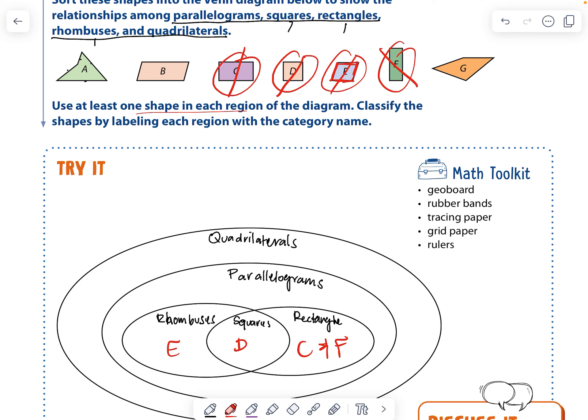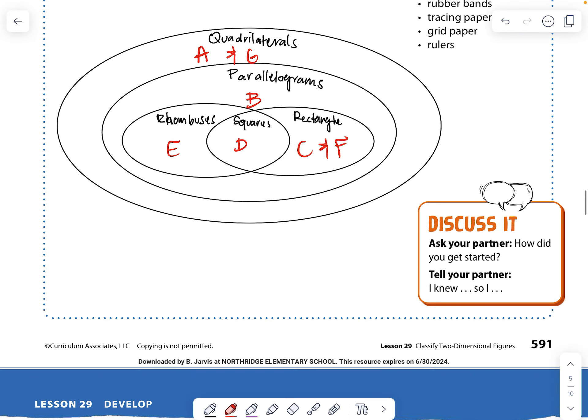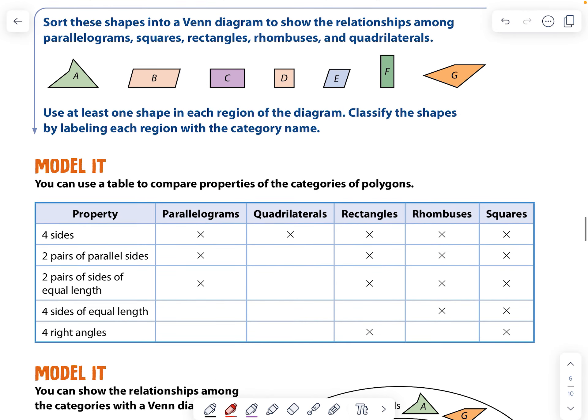Then we're going to find a parallelogram, which has the sides are parallel, which is B. And then anything that's left over doesn't fit in any of these. So it just has four sides. Any shape with four sides are going to go under there. Quadrilaterals. Okay.